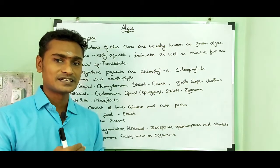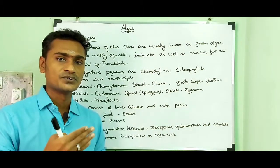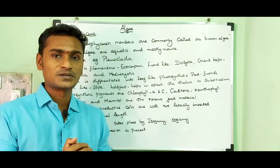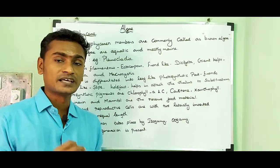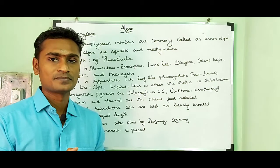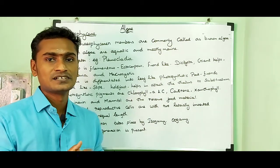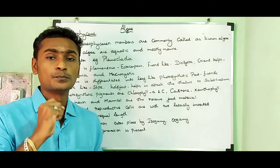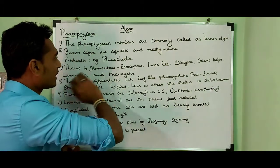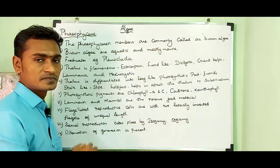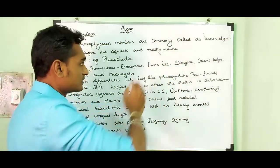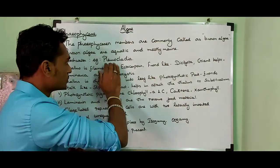That's all about the class Chlorophyceae. Next, the salient features of Phaeophyceae. The Phaeophyceae members are otherwise called brown algae due to the presence of the accessory pigment called fucoxanthin. It gives a golden brown color to the algae. The brown algae are aquatic and mostly marine, though some can occur in freshwater — example, Pleurocladia.